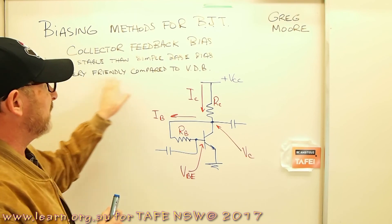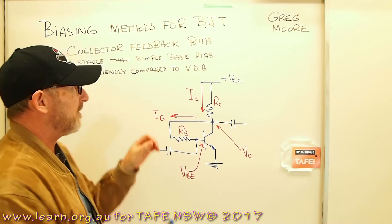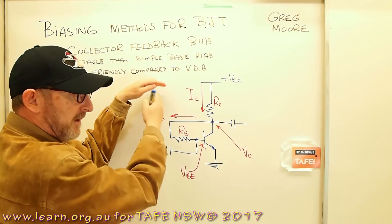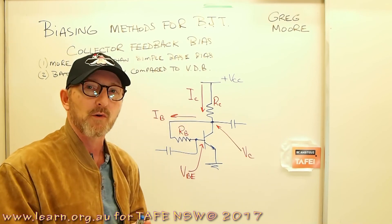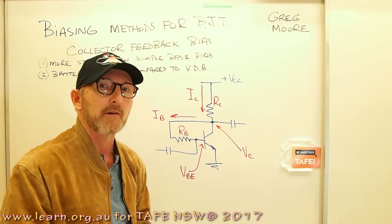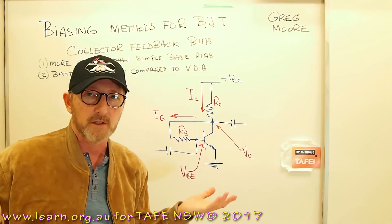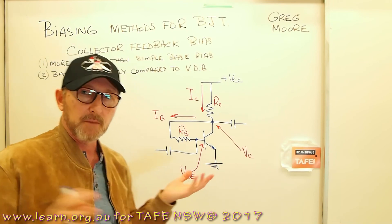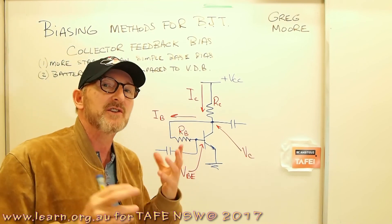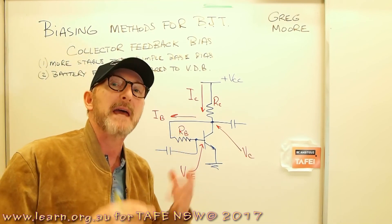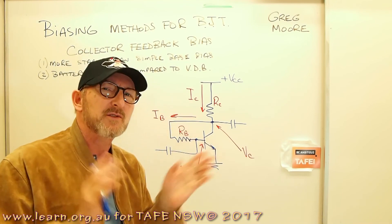And it's battery friendly compared to voltage divider bias. Voltage divider bias requires two resistors, a fairly stiff voltage divider in the base circuit which is always drawing current and that can be wasted current in a battery application. This type of biasing technique was extremely common in early transistorized devices from Japan like Japanese transistor radios.